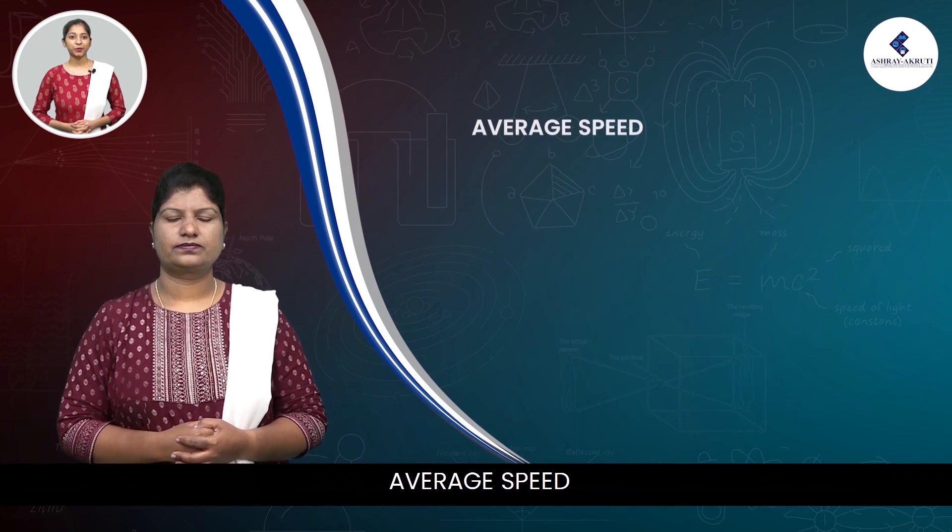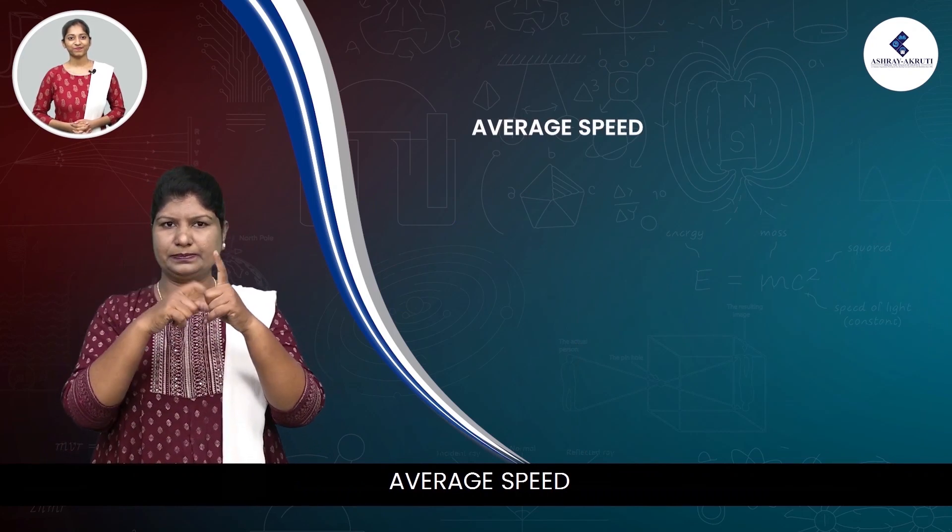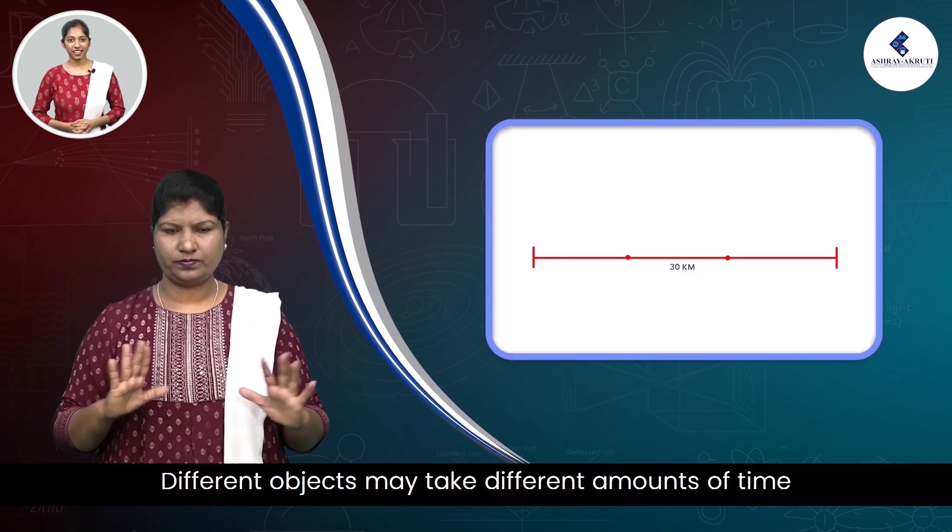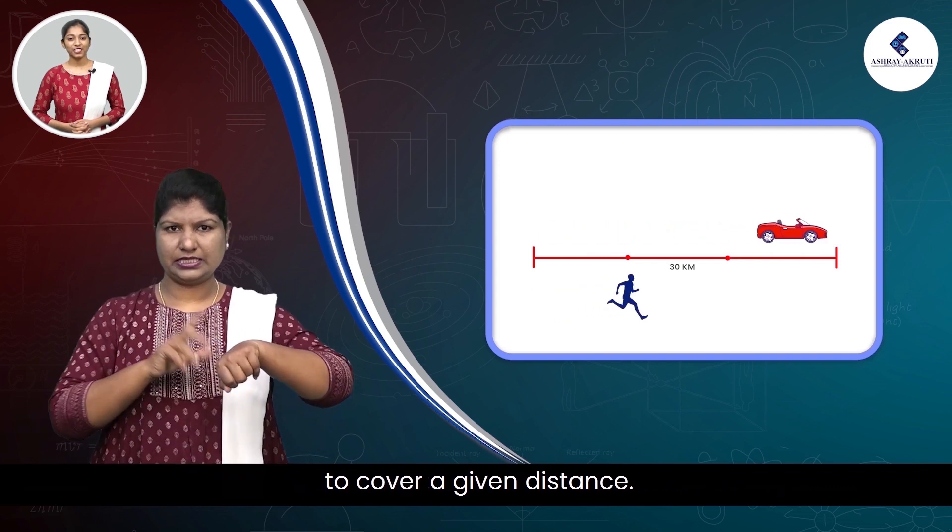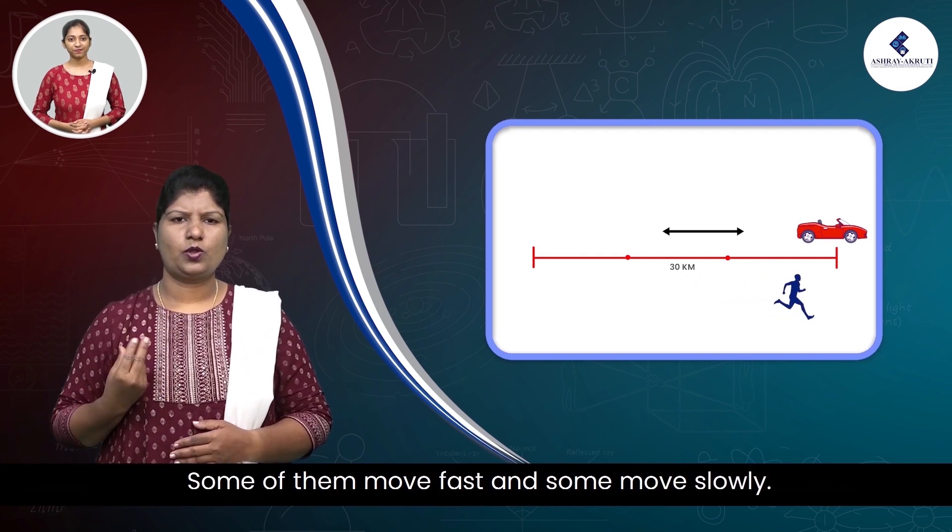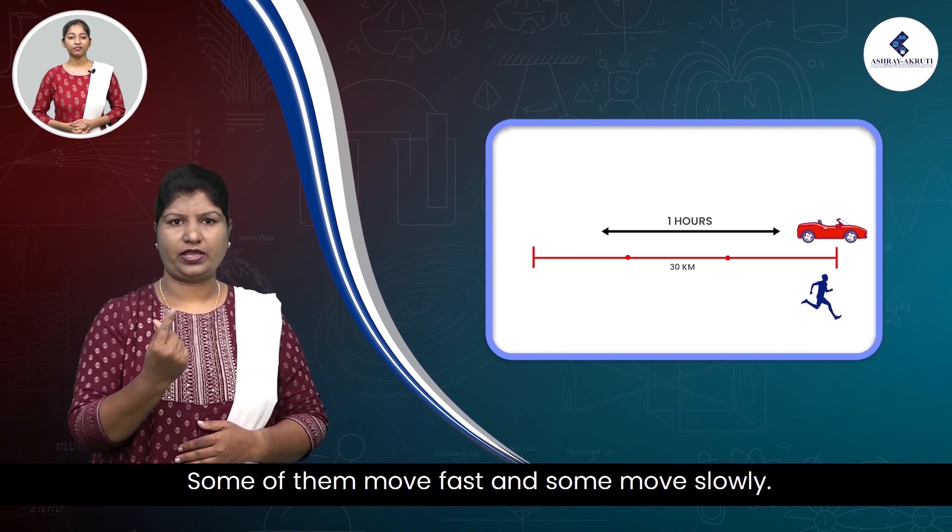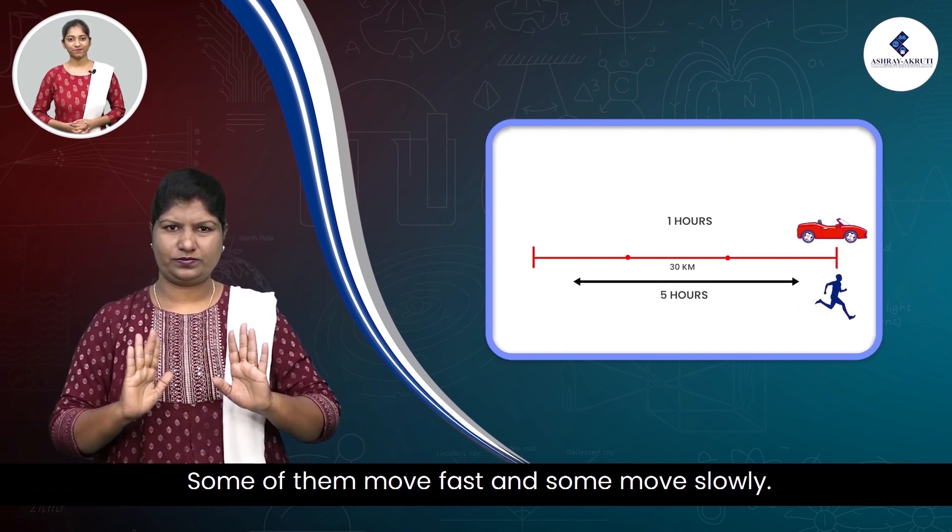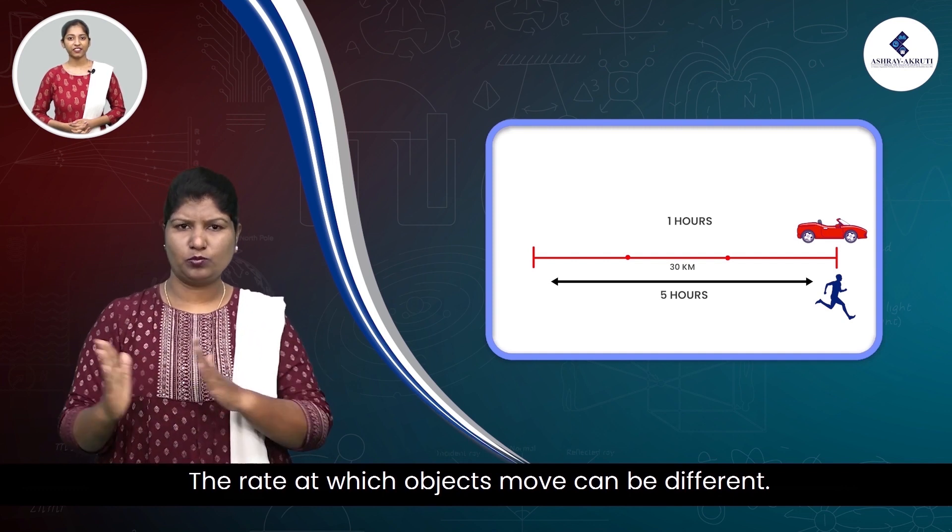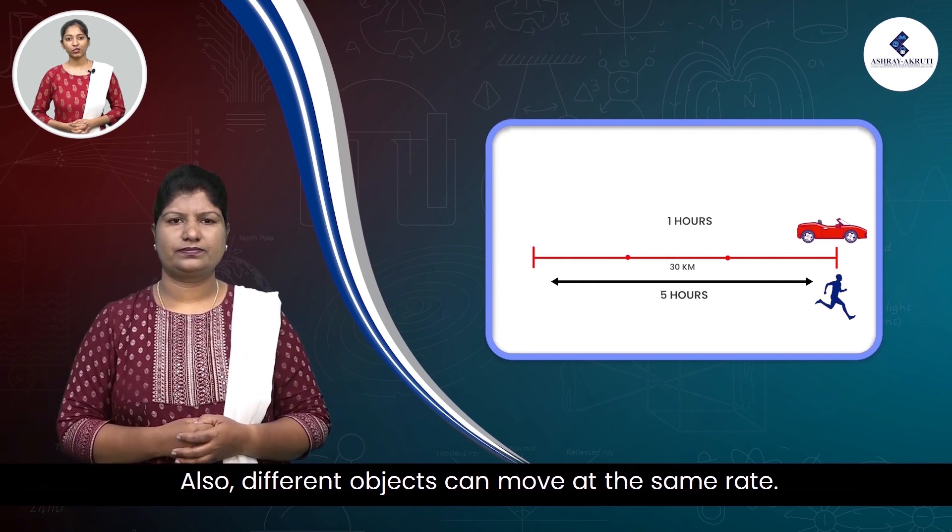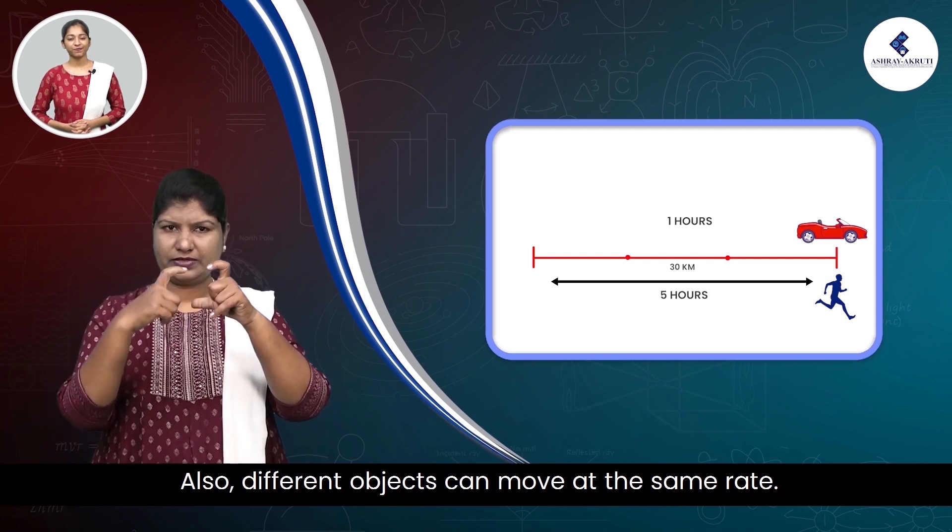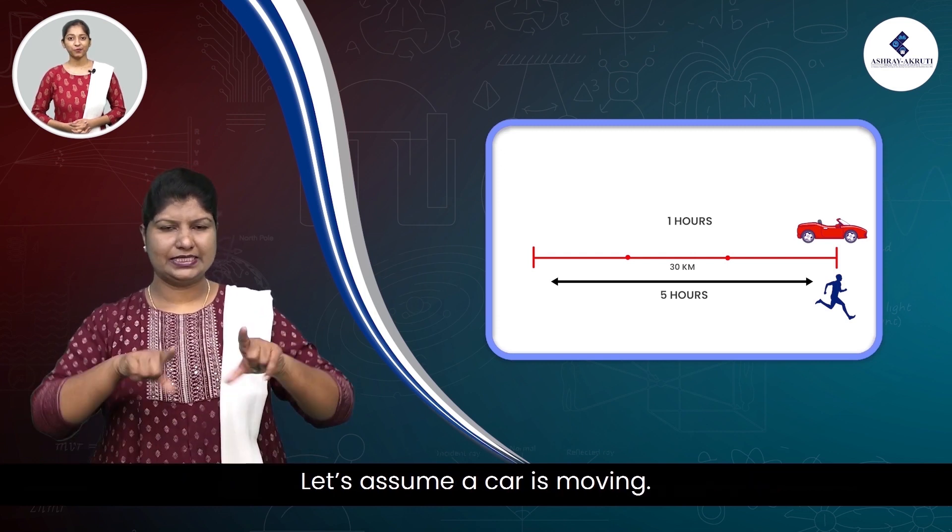Average speed. Different objects may take different amounts of time to cover a given distance. Some of them move fast and some move slowly. The rate at which objects move can be different. Also, different objects can move at the same rate.